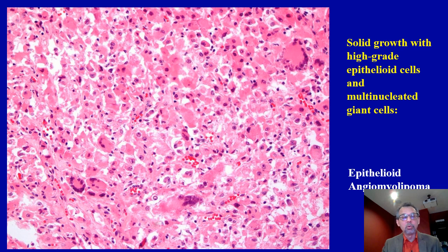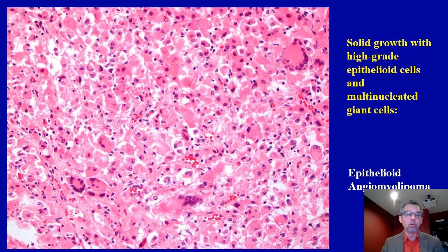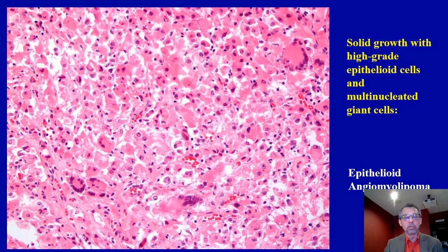When you see a very solid-looking tumor with oncocytic cells resembling ganglionic-type cells with pushed-out nuclei and multinucleation without any prominent vasculature, consider epithelioid angiomyolipoma. A small proportion of angiomyolipomas present exclusively with epithelioid morphology — also known as PEComas. In this setting, you want to do melanocytic markers, smooth muscle markers, and Cathepsin K to arrive at a definitive diagnosis. Don't force these tumors into a known subtype unless you have thoroughly worked up the case.